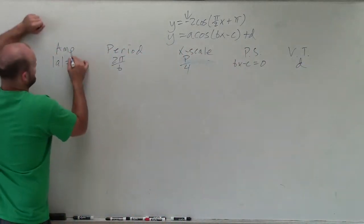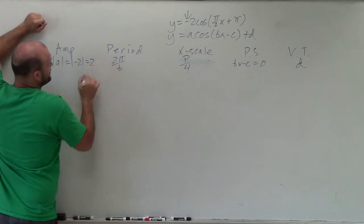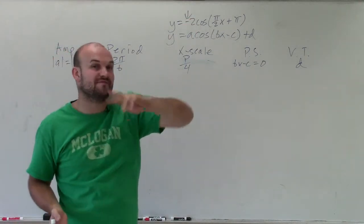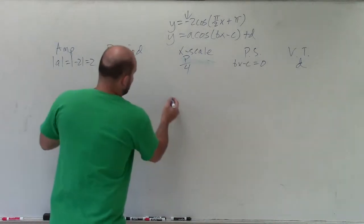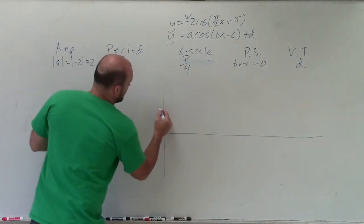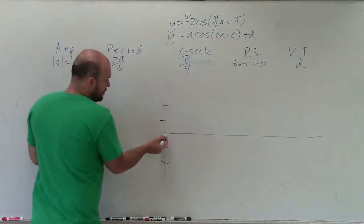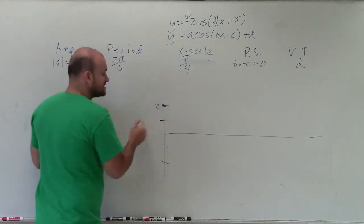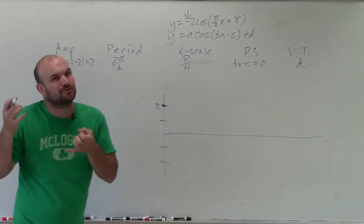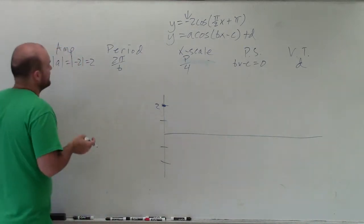So absolute value of a, we have absolute value of negative 2, which is just equal to 2. That means the half distance of the maximum to the minimum of my graph is going to be 2. So when I'm graphing this equation, that's going to go up 2, down 2, right? Now, we're graphing cosine, we always start at the maximum. That means it's going to start at 2. We always start when we're graphing the initial period. I want to make sure that's very clear.